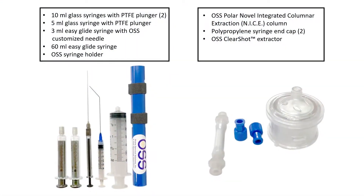On the left there are two 10 milliliter glass syringes with plungers, a 5 milliliter glass syringe, a 3 milliliter glass syringe with customized needle, a 60 milliliter glass syringe, and an OSS syringe holder. On the right we have an OSS polar NICE column, two end caps, and an OSS clear shot extractor.